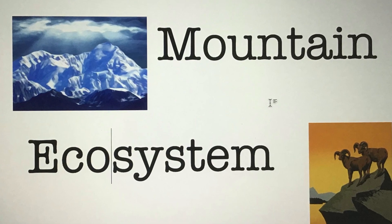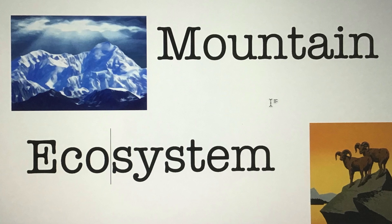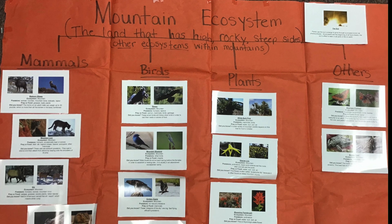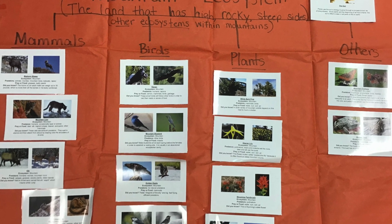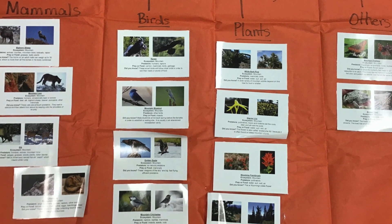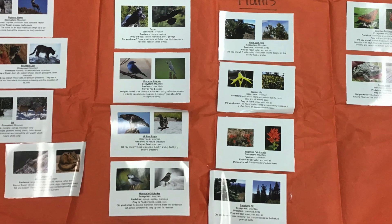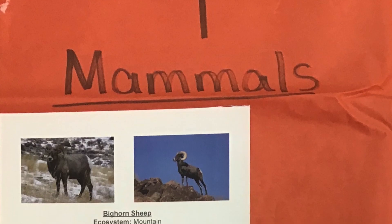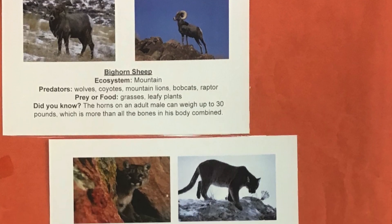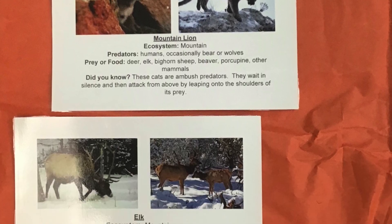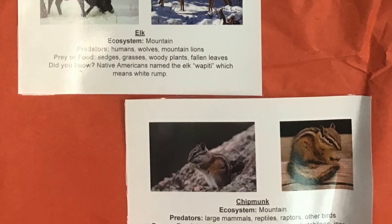These include forests, meadows, lakes, streams, and valleys. Some mountain wildlife live in even the coldest areas where you can find snow year-round. Many plants and animals can be found in this ecosystem. Mammals like bighorn sheep, mountain lions, elk, and chipmunks live there.